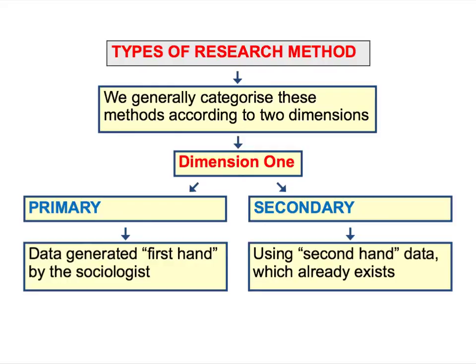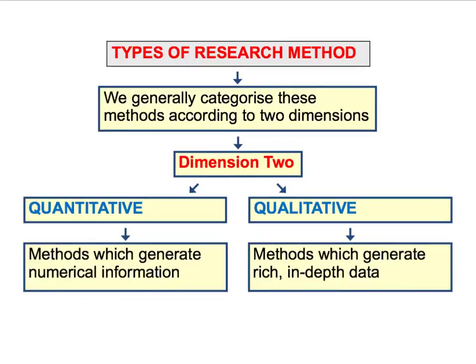Secondary data refers to information which already exists — second-hand data that's been produced by somebody other than the sociologist doing the research. Just as with primary research you could produce either quantitative or qualitative data, secondary data can also be presented either in the form of numbers or statistics — quantitative data — or it can be based on a qualitative approach using rich, in-depth data. In this first screencast we're going to focus on the use of quantitative secondary data.